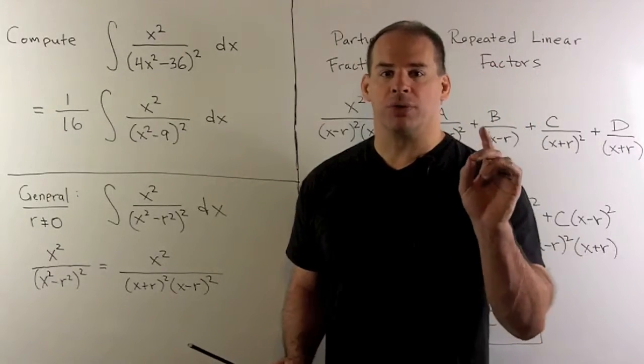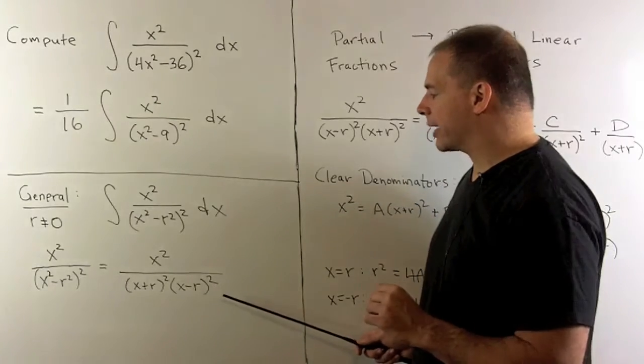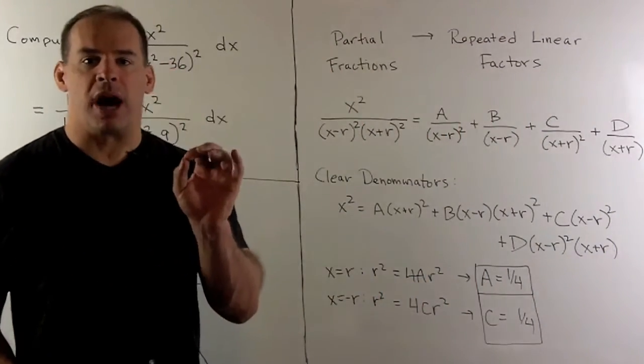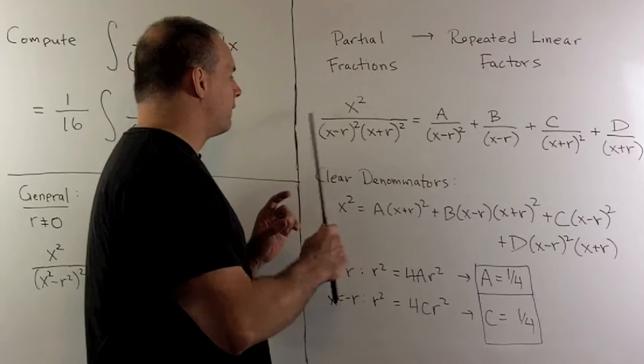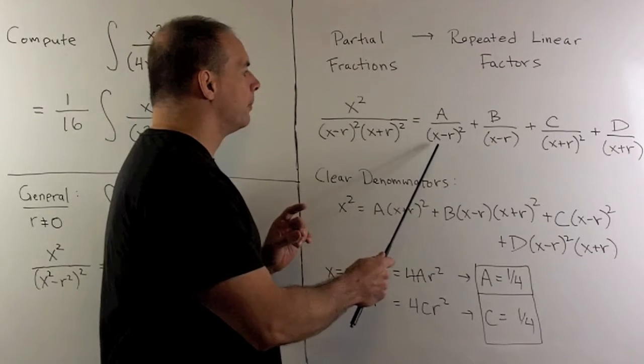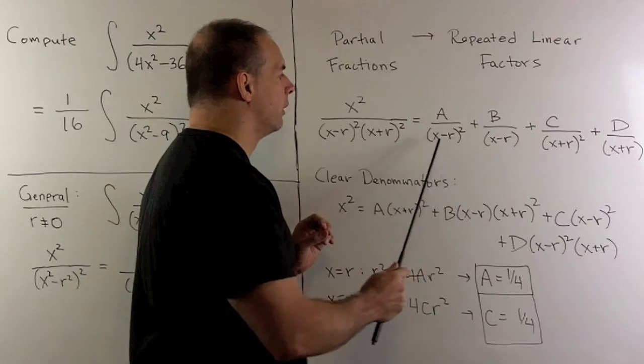We're in the case of a partial fractions integral where we have repeated linear factors. The partial fractions recipe in this case: I'm going to take one of our factors in the denominator. We contribute a term for its highest power, and then we also put in terms for the lower powers.